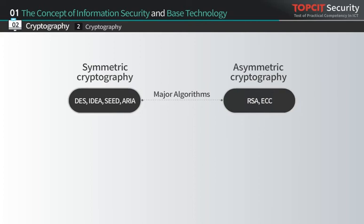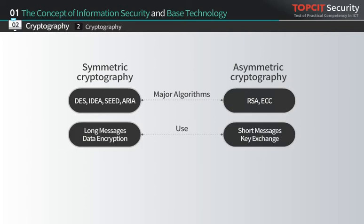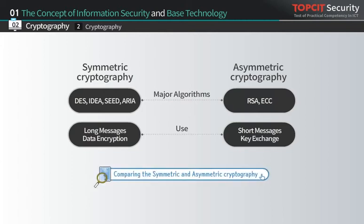Let's compare symmetric and asymmetric cryptography. DES, IDEA, SEED, and ARIA, developed in Korea, are the main examples of symmetric cryptography, and RSA is a major asymmetric cryptography. Symmetric cryptography is generally used to encrypt long messages and data, while asymmetric cryptography is used for safely sending short messages and keys. Please refer to the pop-up screen for details.